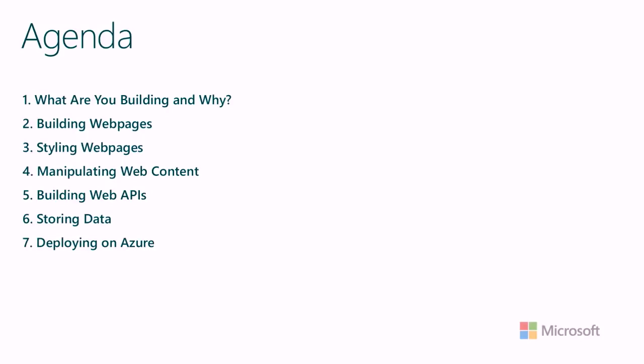Next up is manipulating web content — adding behavior to web pages — using a language called JavaScript. From there we'll get into some back-end web development concepts, and we'll learn about databases so that you can store data for your app. And finally, we'll learn how to put your app out to the world using Azure. By the end of this course, you'll have designed an app for something you're interested in, learned how to build it from scratch, and you'll have it up and live on the internet for other people to access.